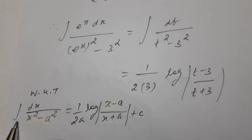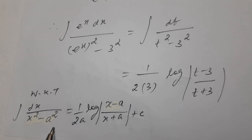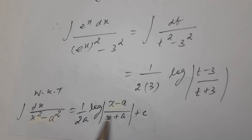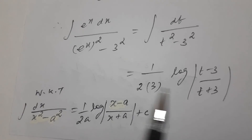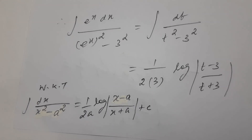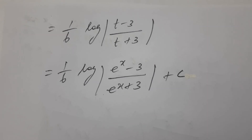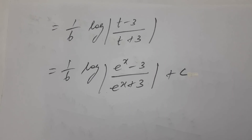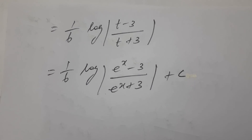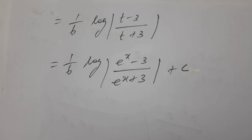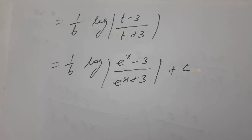Formula: integration dx divided by x square minus a square is equal to 1 by 2a log of x minus a divided by x plus a, plus c. With x equal to t, this gives 1 by 6 log of t minus 3 divided by t plus 3. Substituting t equals e power x: answer is e power x minus 3 divided by e power x plus 3, plus c.